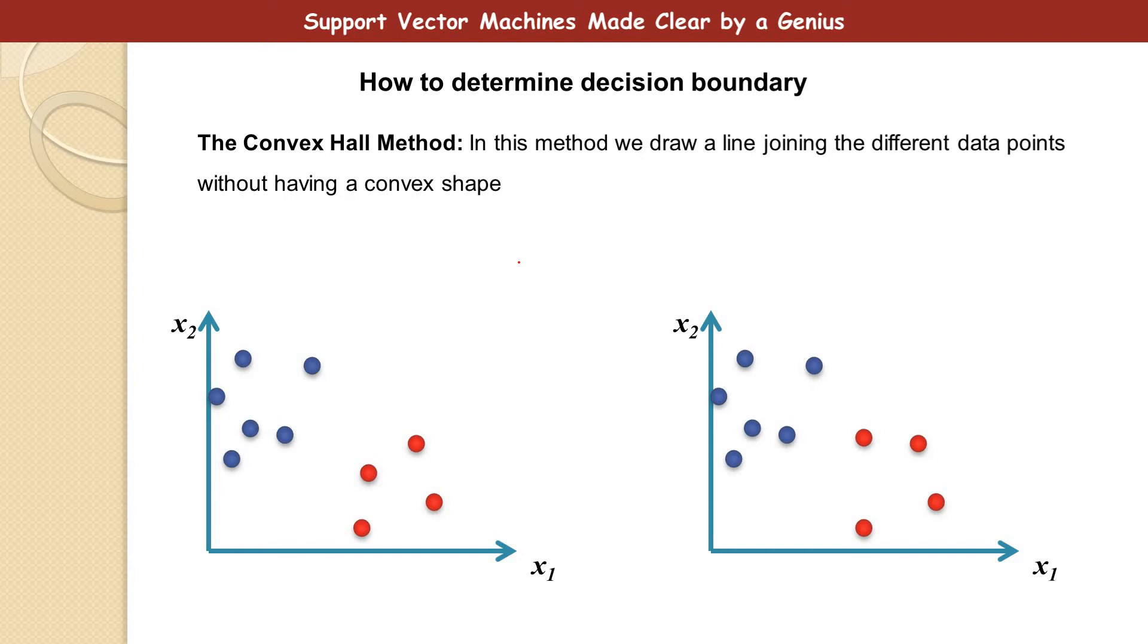So one method is called the convex hull method, and it says in this method we draw a line joining the different data points without having a convex shape. So simply draw a line joining the points.